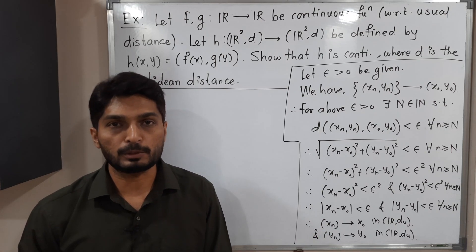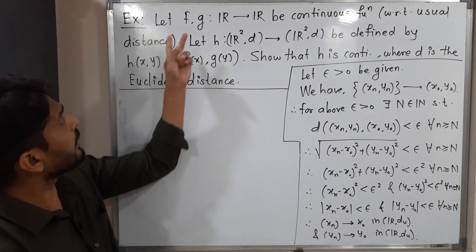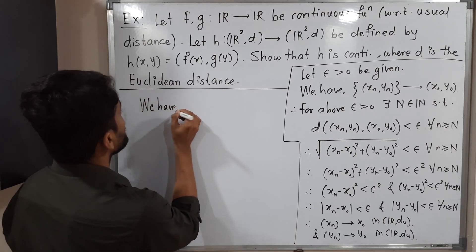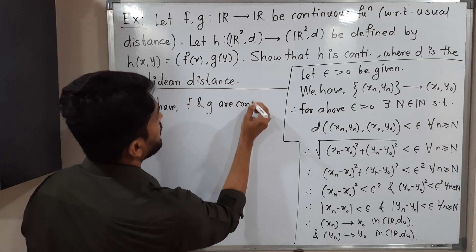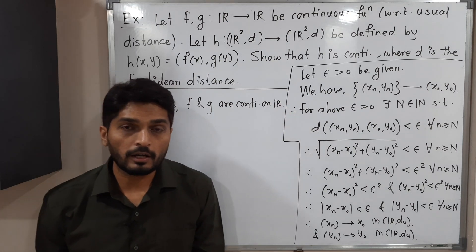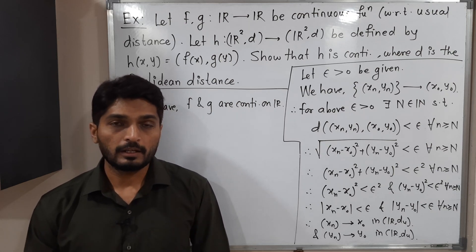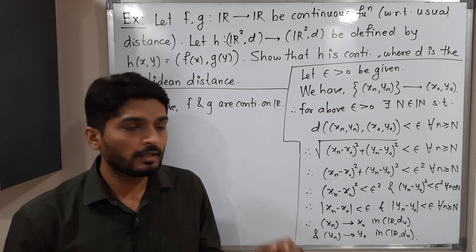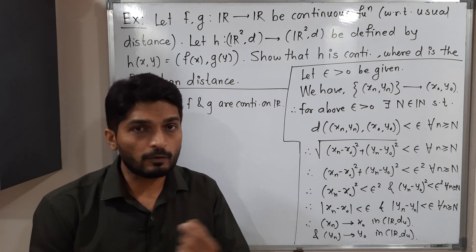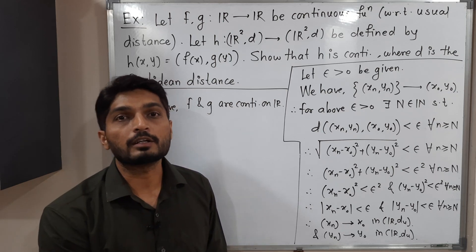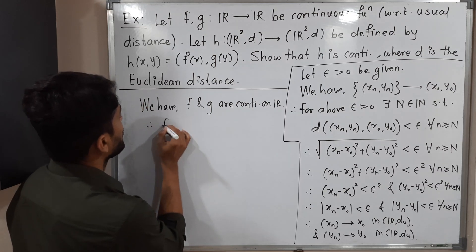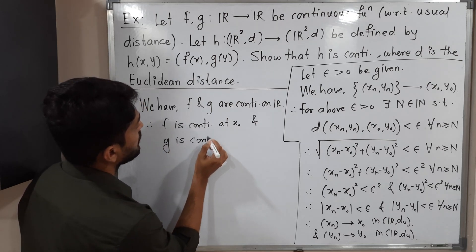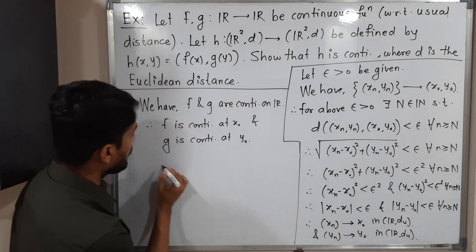The important information is that F and G are both continuous functions on ℝ. Since F and G are continuous at each and every point of ℝ, we can say F is continuous at x₀ and G is continuous at y₀ — since they are continuous everywhere, we simply select these specific points. Therefore F is continuous at x₀ and G is continuous at y₀.